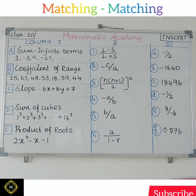So the question is: sum of infinity terms — 1, 3, 9, 27. So you will choose the second column formula. Third column, the answer will be found.